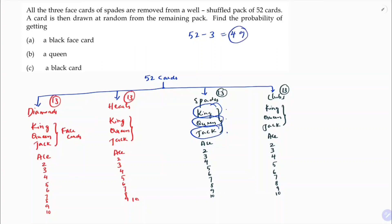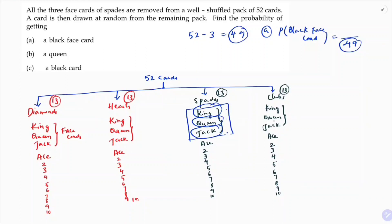What is the probability of a black face card? Total cards are 49. Probability of an event = number of favorable outcomes divided by total number of outcomes. Total outcomes = 49. For black face cards: there were originally 6 black face cards, but 3 have been removed from spades, so 3 are left. Answer: 3/49.